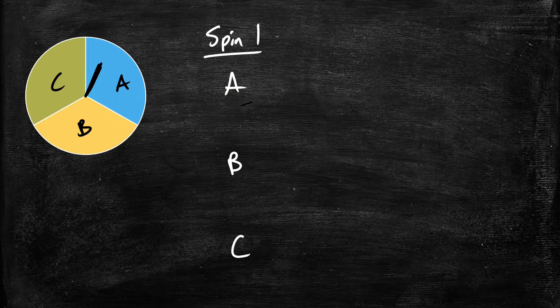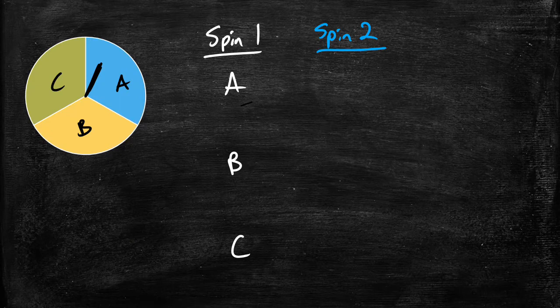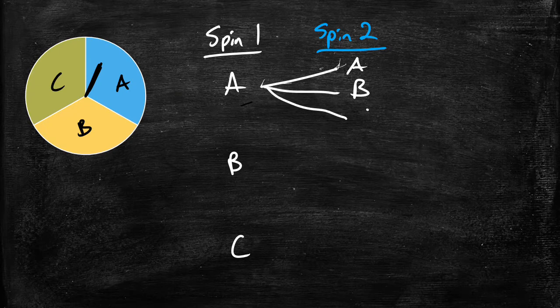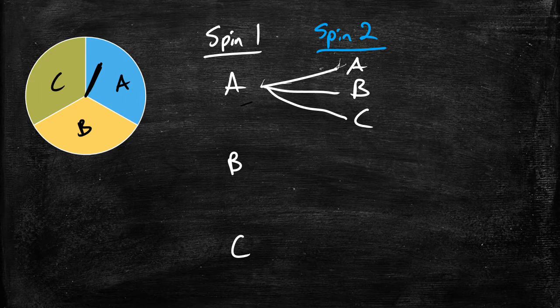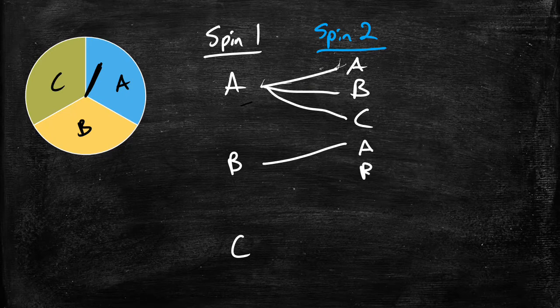Then we're going to spin it a second time. On spin 2 you could either get an A, a B, or a C. On spin B we could either get, or sorry, after we spin and we get a B on the second spin you could either get an A, a B, or a C again.